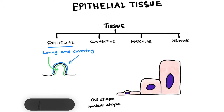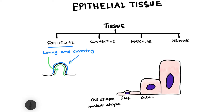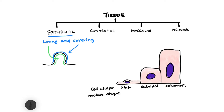Epithelial tissue has different cell shapes. One cell is flat, another is cuboidal, and the third is columnar. This serves as an important method of classification. The nucleus reflects the shape: in flat cells the nucleus is flattened, in cuboidal cells it is spherical, and in columnar cells it is elongated.